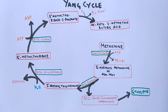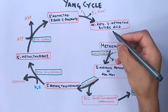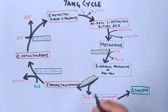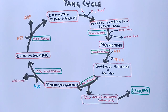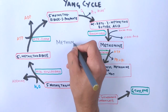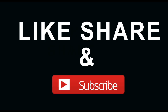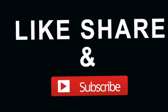Eventually, alpha-keto-gamma-methylthiobutyric acid is converted back into methionine by the action of transaminase enzymes. This way methionine is recycled back, maintaining the methionine pool for ethylene biosynthesis, as discussed in the previous video. This was all about the methionine or Yang cycle in plants. If you liked the video, give it a thumbs up and make sure to subscribe. Thanks.